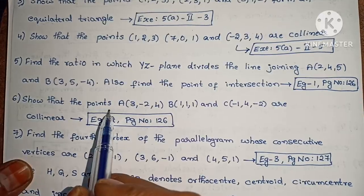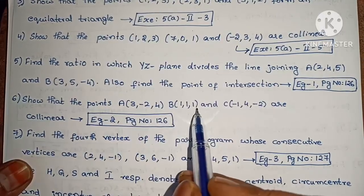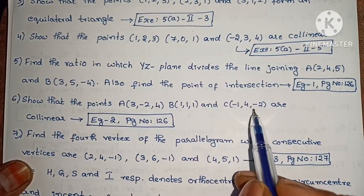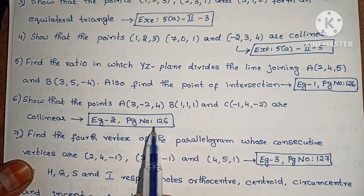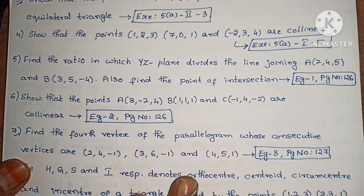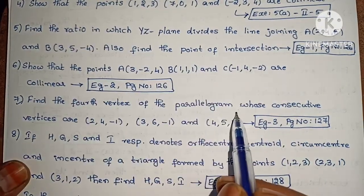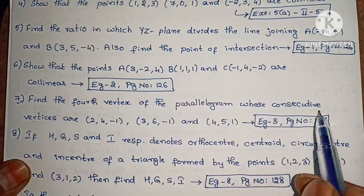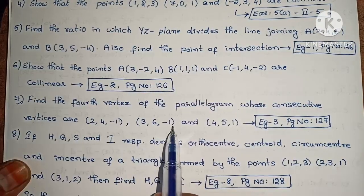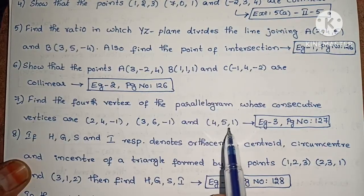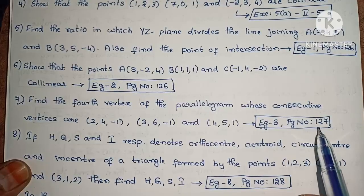Next, show that the points A(3,2,4), B(1,1,1) and C(1,4,2) are collinear — Example 2, page number 126. Next, find the fourth vertex of the parallelogram whose consecutive vertices are (2,4,1), (3,6,1) and (4,5,1) — Example 3, page number 127.